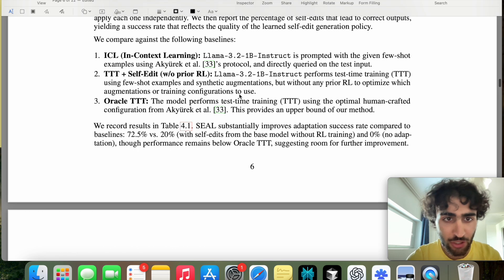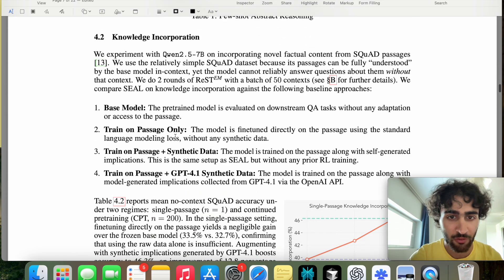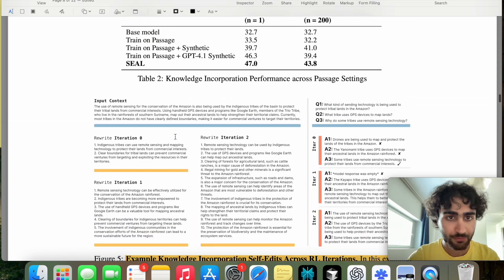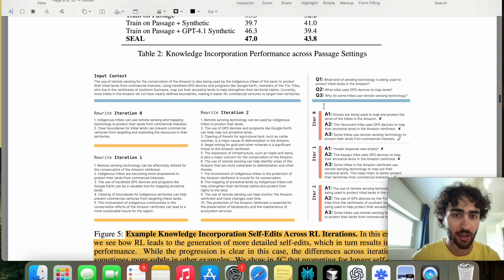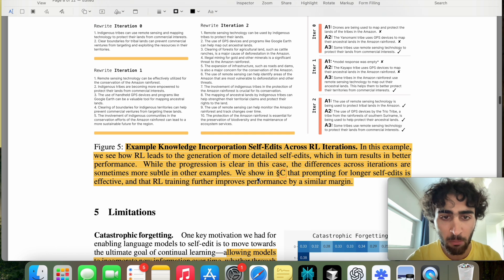In terms of results, I mentioned the only important result, which is 72.5% to 20%, 52.5% increase in performance, quite remarkable. And then here, if we look at knowledge incorporation, they just have an example of how it improves iteratively. In this example, we show how RL leads to the generation of more detailed self-edits, which in turn results in better performance. While the progression is clear in this case, the differences across iterations are sometimes more subtle in other examples.